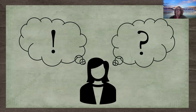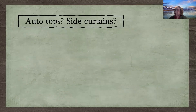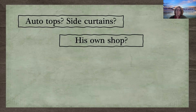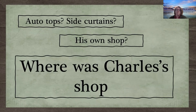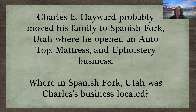But now I had so many more questions. Auto tops — what are auto tops? What are side curtains? Charles owned his own shop. And the biggest question on my mind was: where was Charles' shop in Spanish Fork? So I revised my research objective slightly: Charles E. Hayward probably moved his family to Spanish Fork, Utah, where he opened an auto top, mattress, and upholstery business in 1922. Where in Spanish Fork, Utah was Charles' business located?